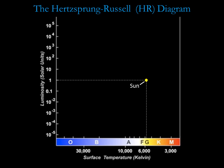On the HR diagrams, stars near the upper left are hot and luminous, stars near the upper right are cool and luminous, stars near the lower right are cool and dim, and stars near the lower left are hot and dim.